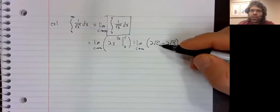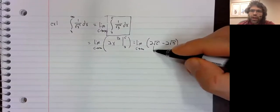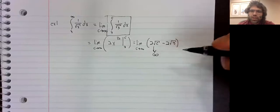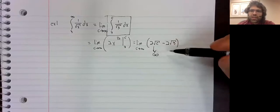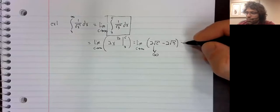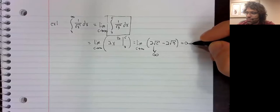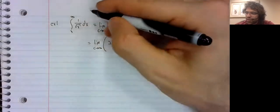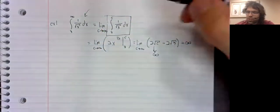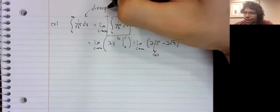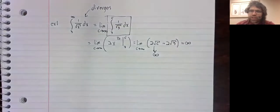As c goes to infinity, so does the square root of c. And infinity minus a finite number is infinite. So this limit is infinite. And this integral diverges.